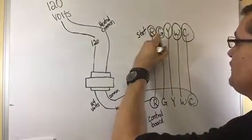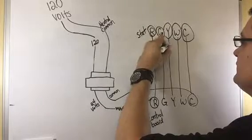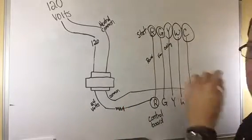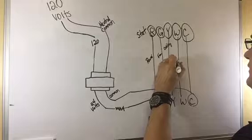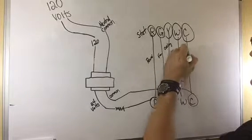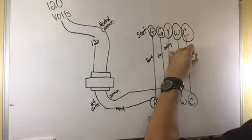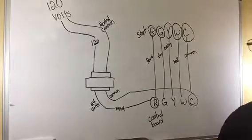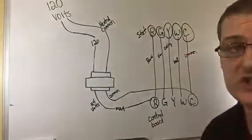Y is a call for cooling. W is a call for heat. And C is common. You need to know what these terminals do.